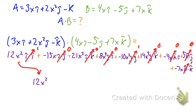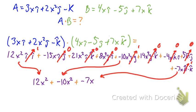So what we have left is we have the 12X², we have -10X², and we have -7X, so we combine that all together and that gives us 12X² - 10X² - 7X, which simplifies to 2X² - 7X.